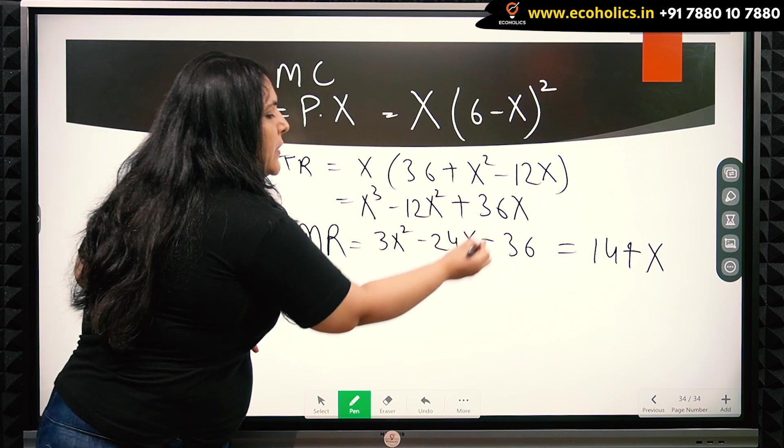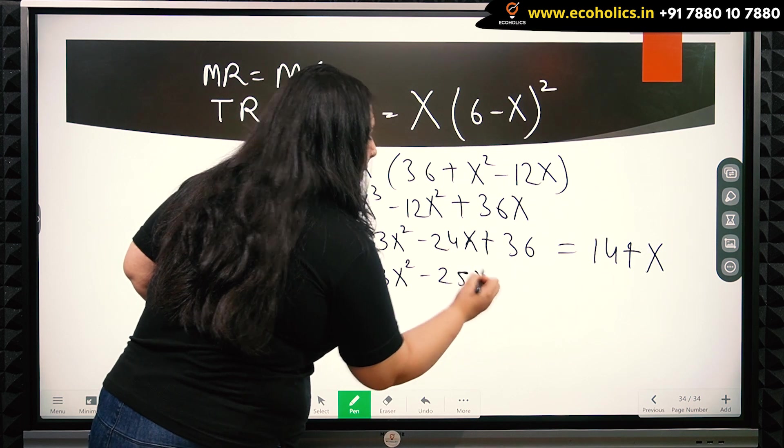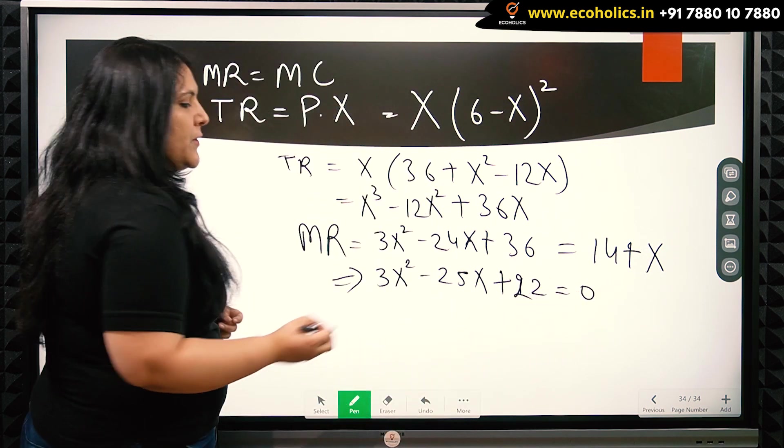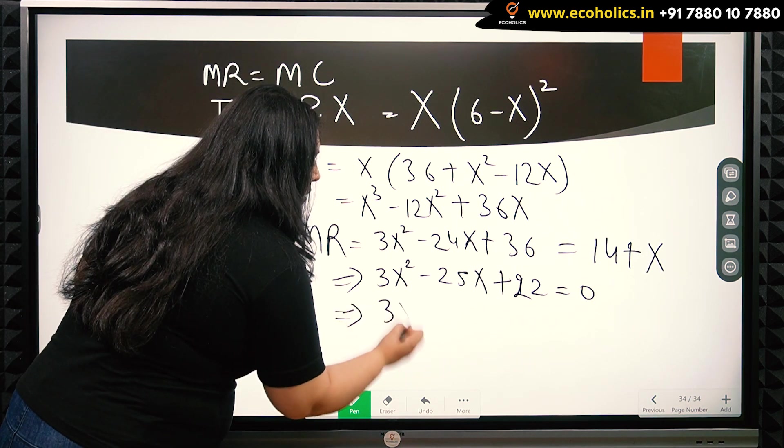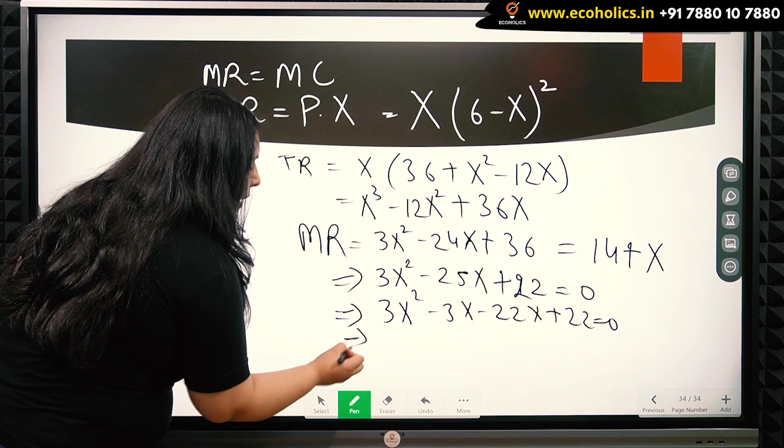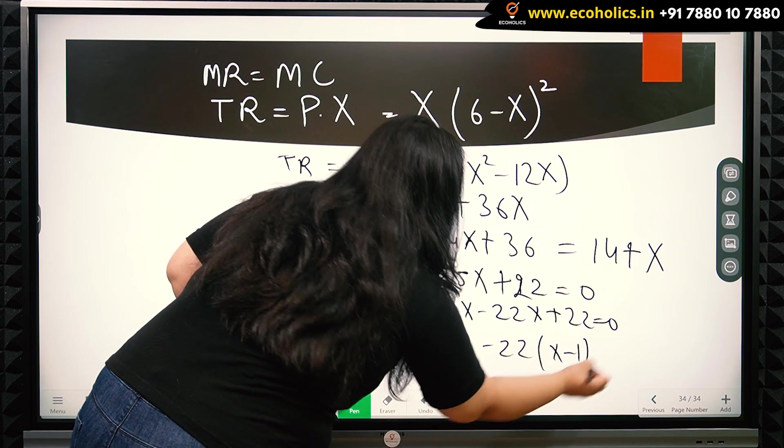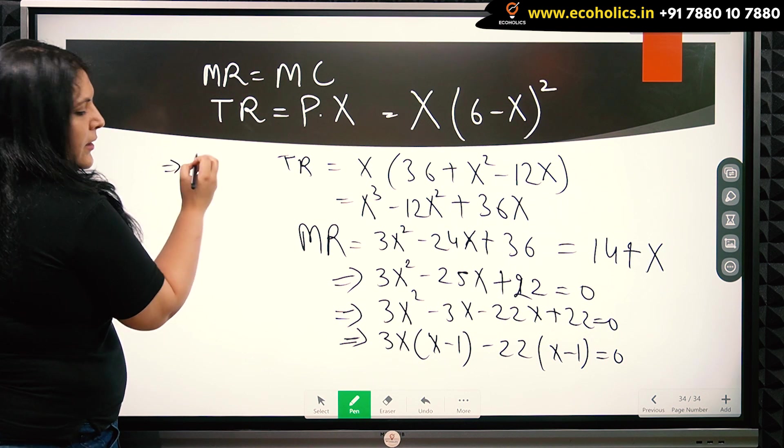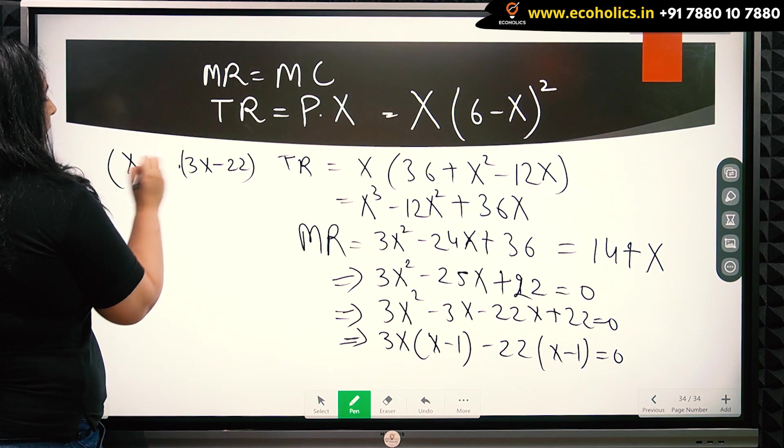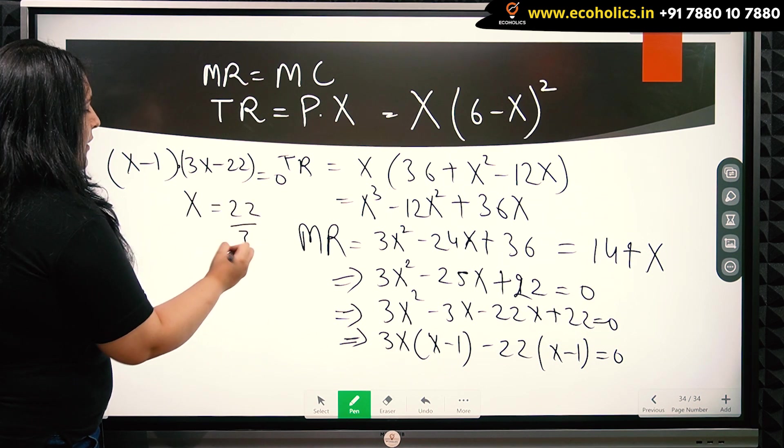Now we have MR = MC and let's solve for the value of x. We have 3x² - 25x + 22 = 0. Now solving this equation, we get 3x² - 3x - 22x + 22 = 0. So we get 3x(x-1) - 22(x-1) = 0. So we get (3x-22)(x-1) = 0. Or the value of x comes out to be 22/3 or 1.